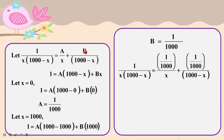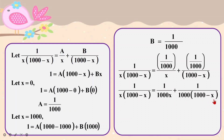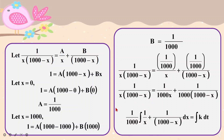Once you've found your a and b, the next thing is to put them back and rearrange them nicely into the question. Now your integration question is basically ready. Once partial fractions are done, I factorize the 1000 out — so I will have one over x plus one over 1000 minus x.